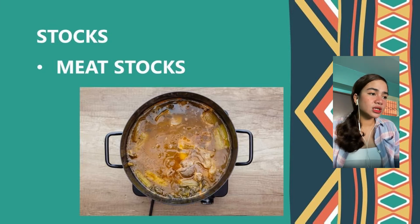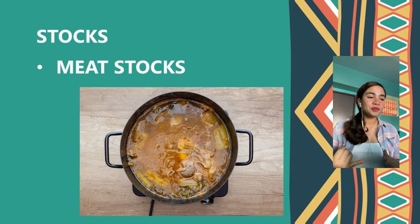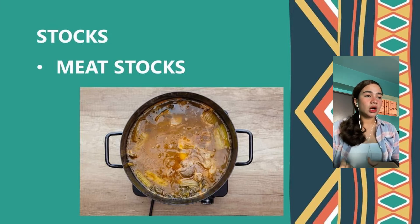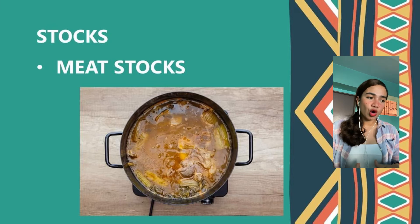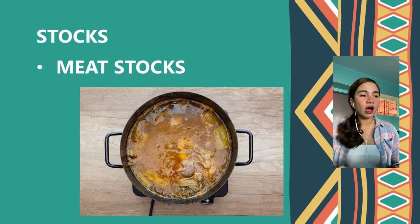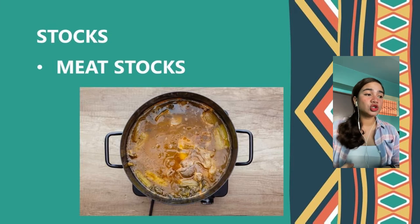Some of the cuts most frequently used for meat stock include: beef — whether oxtail, chuck, shank, bottom round, or short ribs; pork — whether hocks, hump bones, or Boston butt; and lamb — shank, leg, or shoulder.